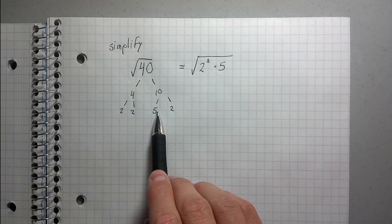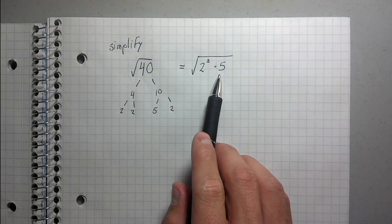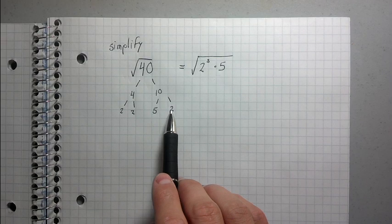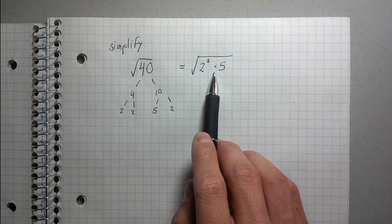So now you're kind of wondering probably why did I write it this way? Alright, well, the reason I did is because now that I have 40 broken down into its prime factors, I can know what to pull out.